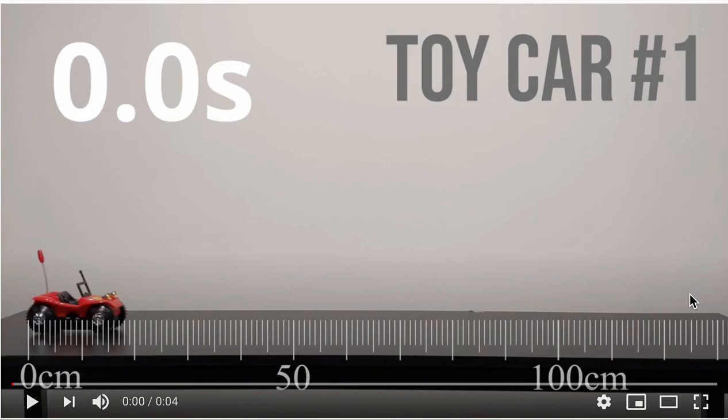So what I want to do is get data for where the car is at different times. It's important to use the same location on the car every time, so I might want to use the back end right where the black wheel is or I could use the front end.